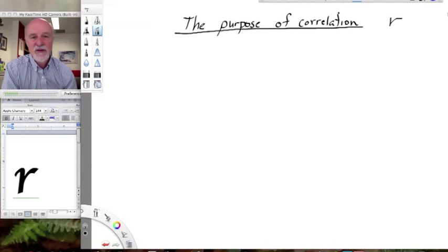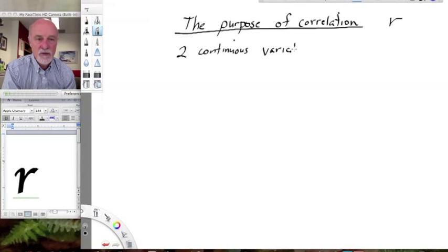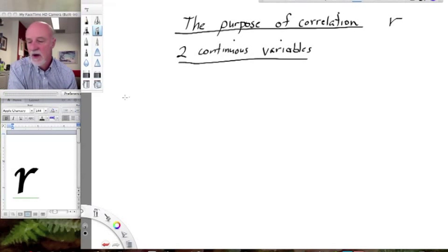The other thing they have in common is that with correlation and regression, we're dealing with two continuous variables. So unlike our past analyses where one variable was nominal and the other was continuous, in the case of ANOVA for example, now we're dealing with two continuous variables and regression and correlation both do that.